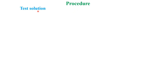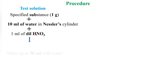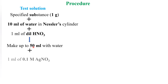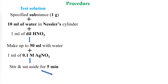Now we will see the procedure for the test solution. Take 1 gram of the specified test sample and add 10 ml of water in a Nessler cylinder. Then add 1 ml of dilute nitric acid and make up the solution to 50 ml with water. Then add 1 ml of 0.1 M silver nitrate, stir the solution, and set it aside for 5 minutes. We then obtain opalescence.